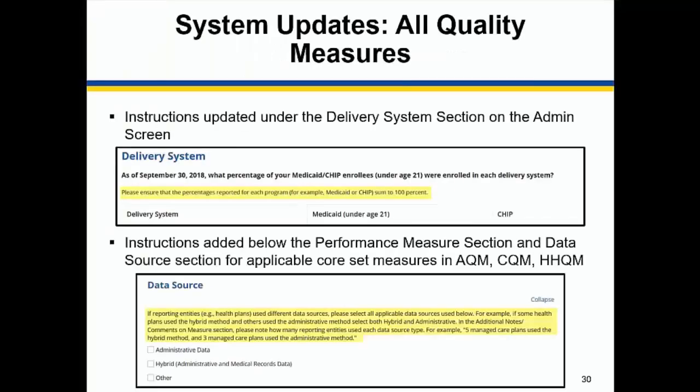For all quality measures in 2019, instructions have been updated under the Delivery System section on the Admin screen. Instructions have also been added below the Performance Measures section and Data Source section within applicable core measures. These updates to the instructions were to improve data quality and are not a change from previous guidance.